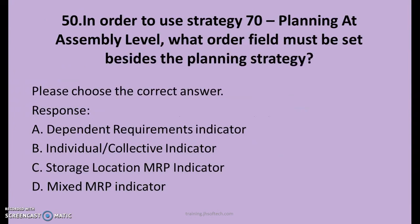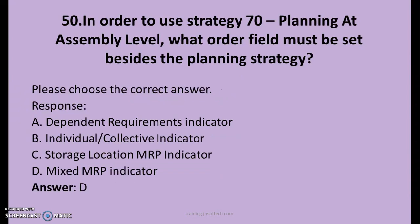50th question. In order to use strategy 70, planning at assembly level, what order field must be set besides the planning strategy? The options are: A. Dependent requirements indicator, B. Individual or collective indicator, C. Storage location MRP indicator, D. Mixed MRP indicator. The right answer is D: Mixed MRP indicator.